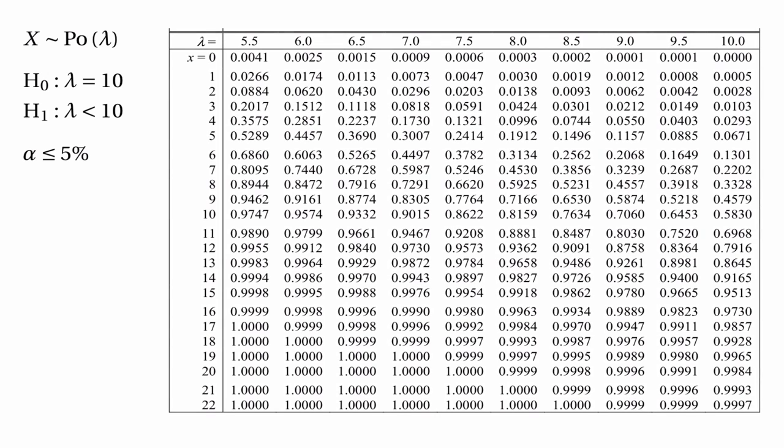Let's aim for a significance level of 5% or less. Let's look at a probability table and consider the values of x one at a time. What if x were equal to 0? Would we end up rejecting the null hypothesis? The probability of getting x equals 0 is 0.0000 to four decimal places — clearly a very tiny probability. In that case we certainly would end up rejecting the null hypothesis, so 0 is inside our critical region.